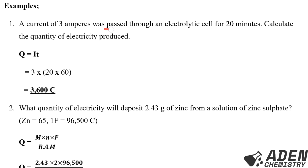Example 1: A current of 3 amperes was passed through an electrolytic cell for 20 minutes. Calculate the quantity of electricity produced. Using Q = IT, we have I = 3 amperes, and T = 20 minutes converted to seconds by multiplying by 60. So Q = 3 × (20 × 60) = 3,600 Coulombs.